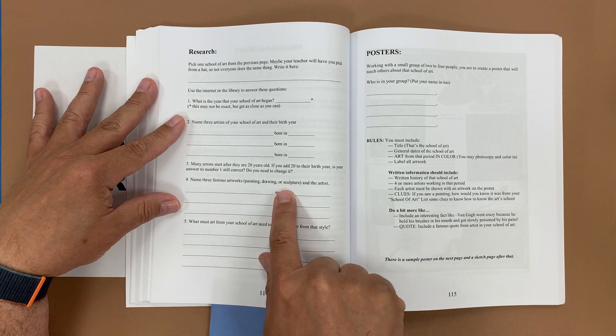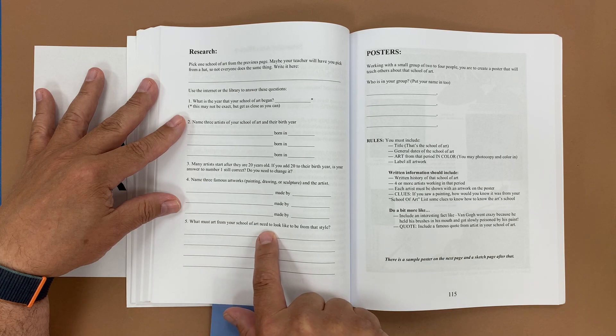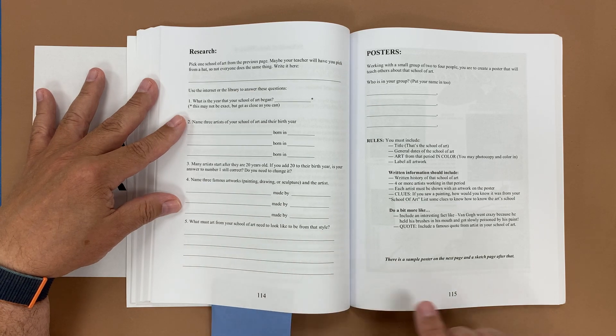Name three famous artworks or paintings, drawings, or sculptures by the artist. What must art from your school of art need in order to look like it is from that particular style?